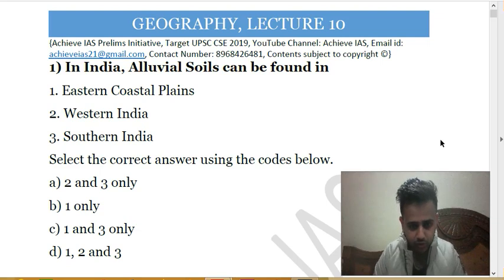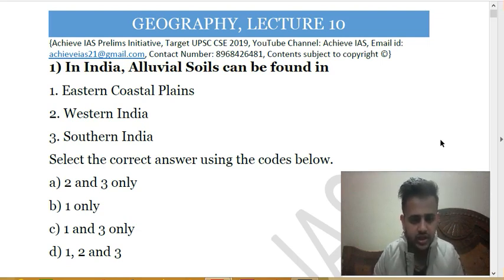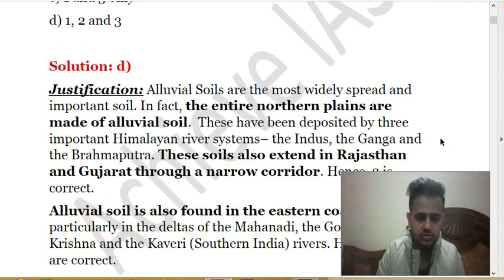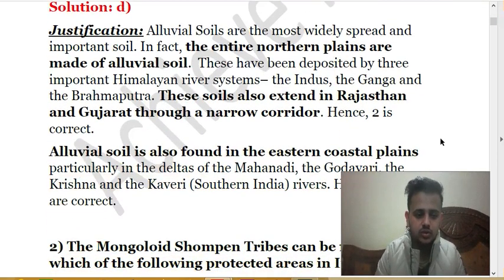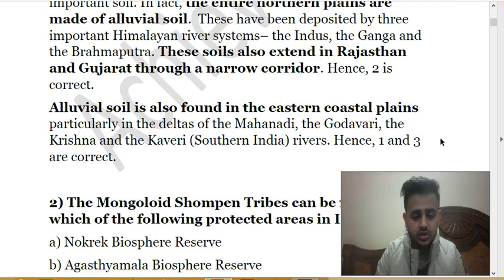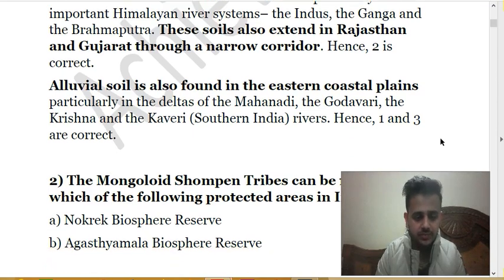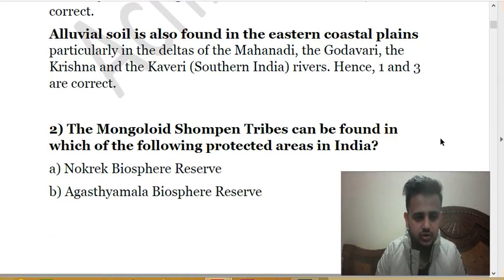These alluvial soils are quite vast in their expanse across India. They are found in the Indo-Gangetic plains and also in western India in Gujarat, and in southern India as well. The entire northern plains are made of alluvial soils, which extend into Rajasthan and Gujarat through a narrow corridor, and can also be found in the eastern coastal plains, particularly in the deltas of Mahanadi, Godavari, Krishna, and Kaveri. So all options are correct and D is the answer.